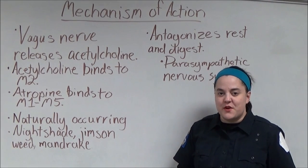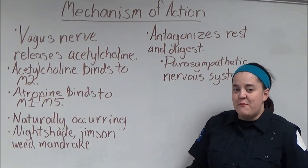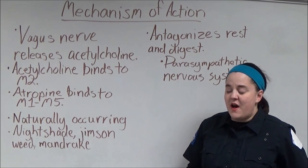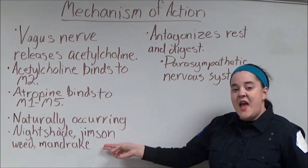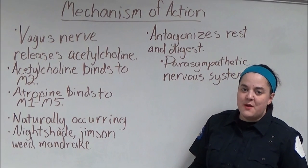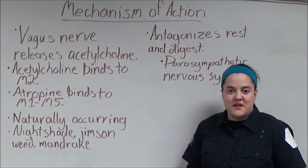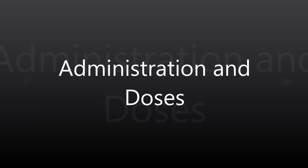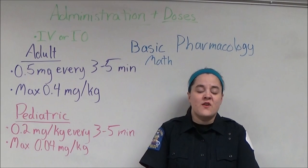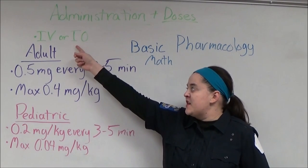According to Tulane University, atropine is a naturally occurring belladonna alkaloid that can be found and extracted from plants such as nightshade, jimsonweed, and mandrake. When administered systemically, atropine antagonizes the rest-and-digest aspects of the parasympathetic nervous system. According to my local protocols, atropine is given either intravenous or intraosseous.